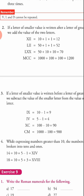Another example: LII — L is 50 and I plus I is 1 plus 1, so 50 plus 1 plus 1 equals 52. To write 52 we write LII. Similarly, LXX means L is 50, X is 10, and X is 10 again — so 50 plus 10 plus 10 equals 70.